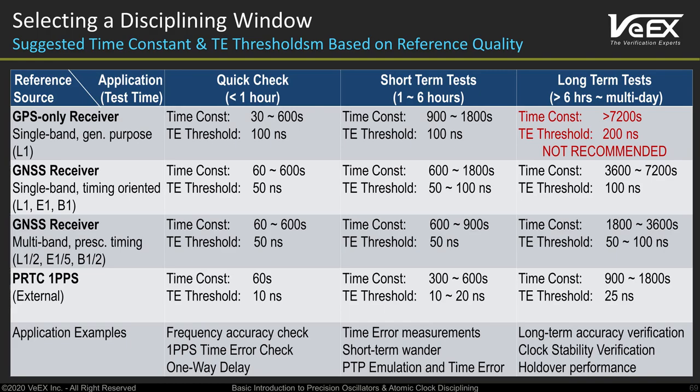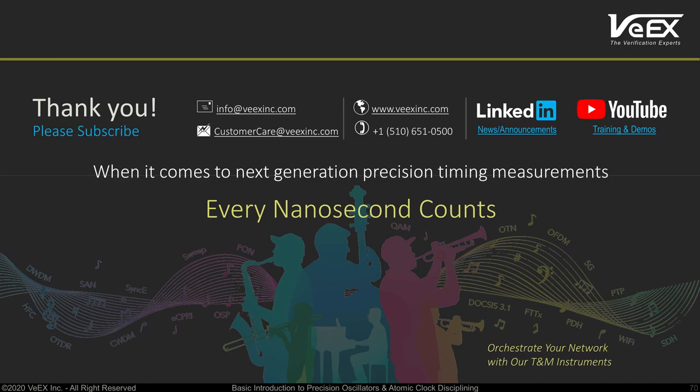You are all set. Here are some generic recommendations for setting time windows depending on applications. Remember, there is always a trade-off between convenience and quality, so choose wisely based on your application requirements and test environment. Longer tests, like measuring long-term clock stability over multiple days, would require longer time constants and more stable inputs. Thank you for watching this training session. We hope we have shed some light into the sometimes obscure world of timing and synchronization. Should you have any questions, feel free to contact us. If you found this video useful, please like it, subscribe to our channels and share it with your colleagues.